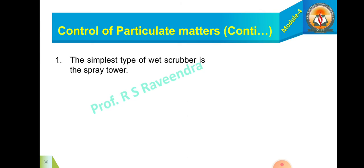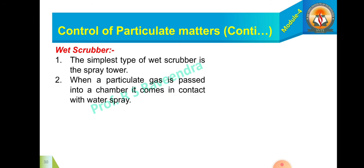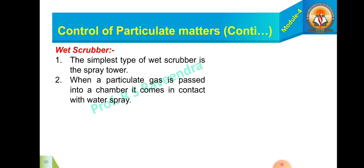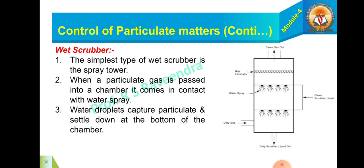The simplest type of method of controlling the particulate matter is a wet scrubber which is nothing but the spray tower. When the particulate gas is passed into the chamber it comes in contact with the spray water. The water droplet captures the particulate and settles down at the bottom of the chamber. So this is the diagrammatic representation of the wet scrubber or spray tower.